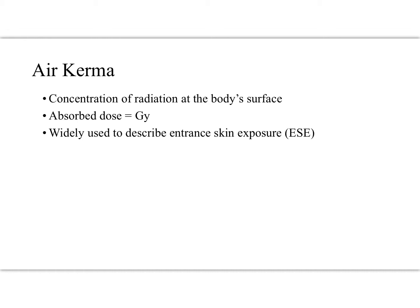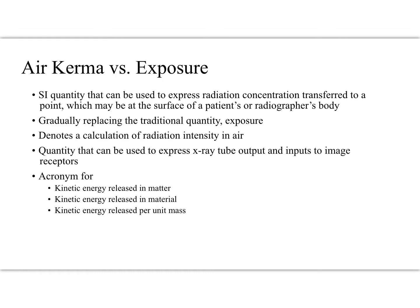Air kerma is actually translating that to the body — the concentration on the body surface — so it's relating exposure to organic systems. Air kerma is what we generally think about things; we tend to think about things in a simplified way and air kerma kind of stands in for exposure. We use it widely to describe an entrance skin exposure. So if I walk outside and there's sunlight, this is the amount of sun that's like striking my skin — the exposure as it were to my skin. It's different from exposure, but we kind of draw an equal sign between them. Air kerma is gradually replacing these traditional quantities of exposure, and we used to see things expressed in roentgen but we're seeing that less and less. It denotes that we've calculated what the radiation intensity was in air and then translated it to that surface.